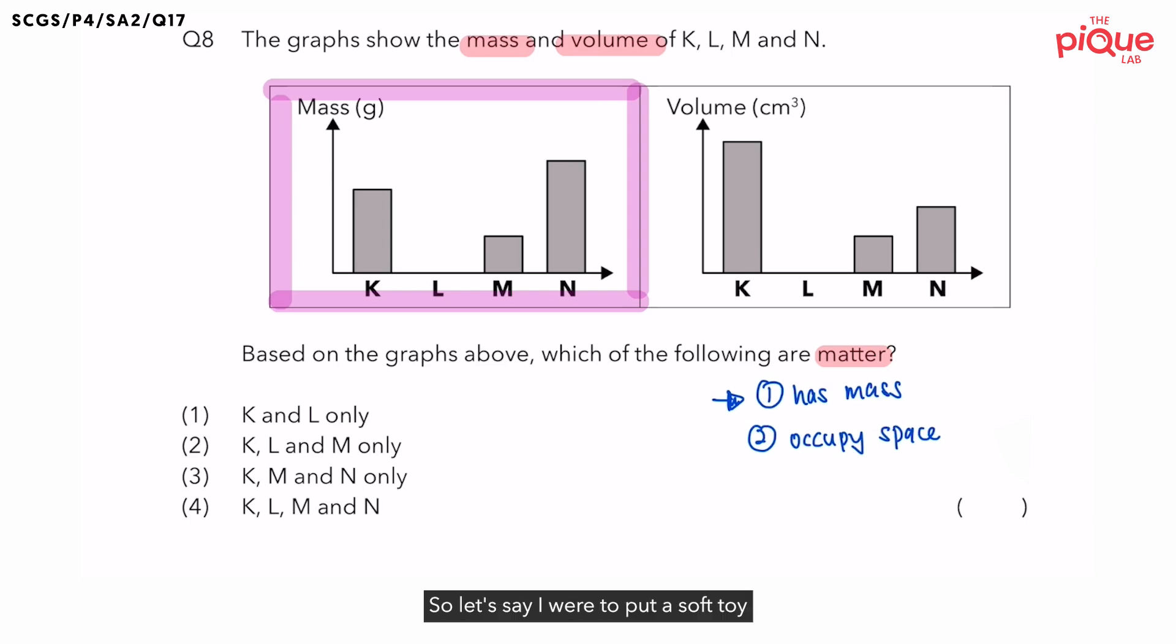So let's say I were to put a soft toy on an electronic balance. Do you expect to see a reading on the electronic balance? Yes. This is because we know that soft toy has mass. If the soft toy has mass, can we call the soft toy a matter? The answer is yes.